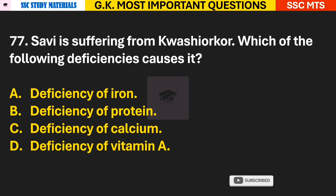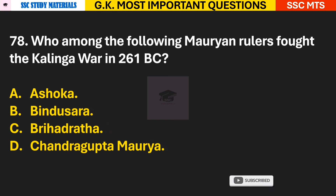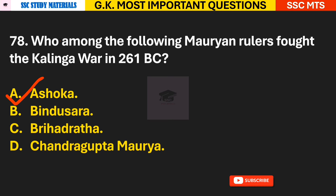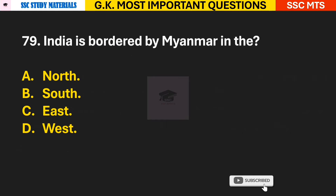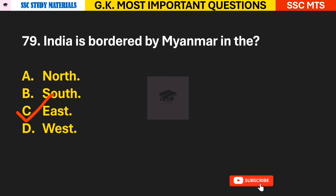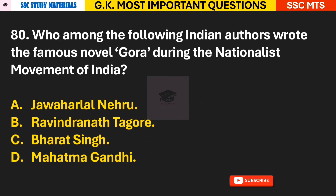Question 78: Which Mauryan ruler fought the Kalinga War in 261 BC? Answer A — Ashoka. Question 79: India is bordered by Myanmar in which direction? Answer C — India is bordered by Myanmar in the east.